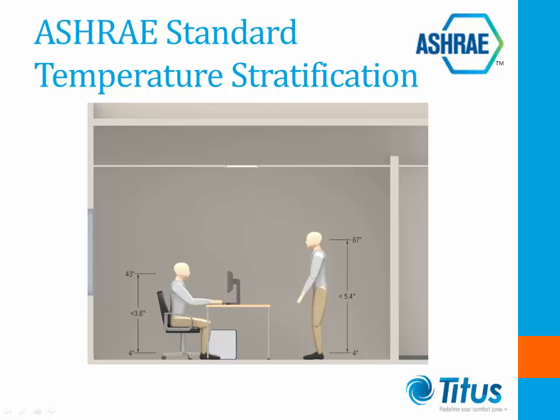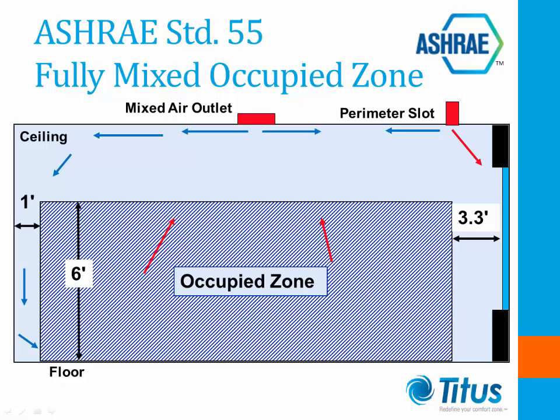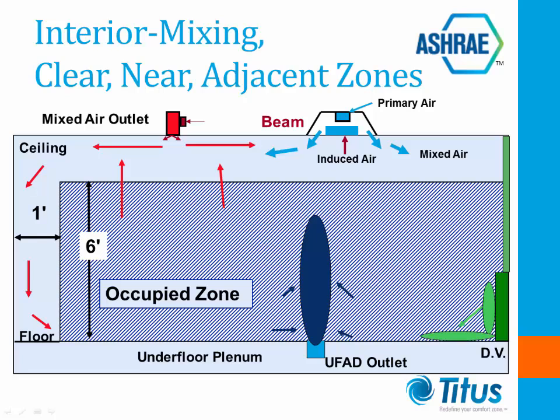An occupant is defined as an individual or composite average of several individuals representative of the population occupying a space for 15 minutes or more. Standard 55 defines the occupied zone as the region normally occupied by people within a space, generally considered to be between the floor and the 6-foot level above the floor and no more than 3.3 feet from an outside wall, window, or fixed heating, ventilation, or air conditioning equipment, and one foot from interior walls. For the 2013 edition, the definition has been modified to include the phrase 'where there are no known occupants.'